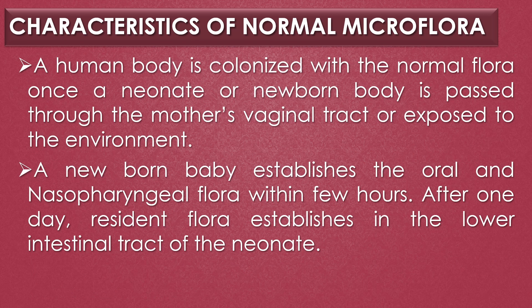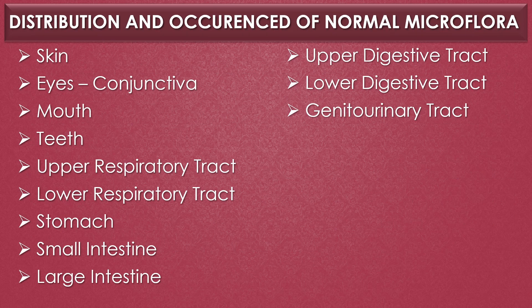A human is colonized with normal flora once a neonate passes through the mother's vaginal tract or is exposed to the environment. A newborn baby establishes oral and nasopharyngeal flora within a few hours, and after one day resident flora establishes in the lower intestinal tract of the neonate. In the upcoming slides we are going to see the distribution of normal microflora in the skin, conjunctiva, mouth, teeth, upper and lower respiratory tract, stomach, small and large intestine, digestive tract, and genitourinary tract.